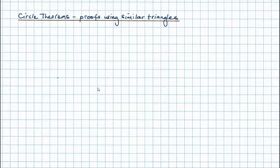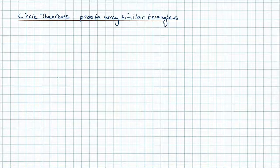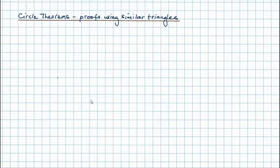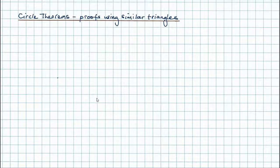In this tutorial we're going to look at three further circle theorems that we're going to prove using the idea of similar triangles. These circle theorems are to do with side lengths, so they're particularly useful when you've got missing lengths and you refer to these theorems in order to find the missing lengths and solve the problem.